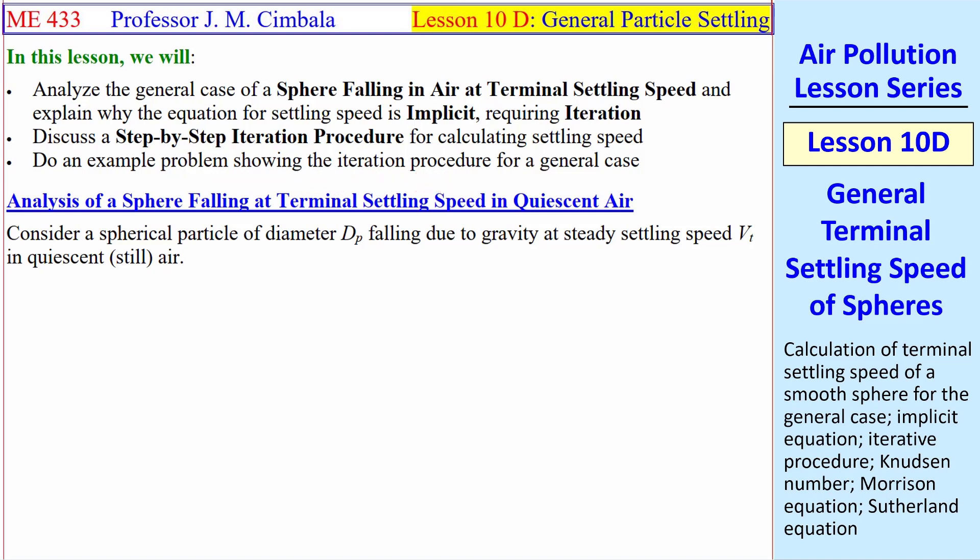First, let's set up the physics and equations for a sphere falling at terminal settling speed in quiescent air. Quiescent simply means that the air is still or not moving.